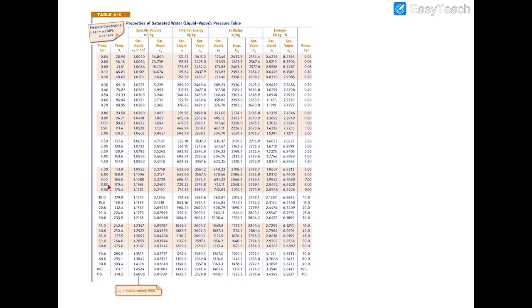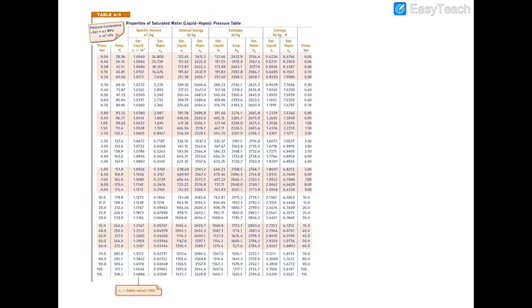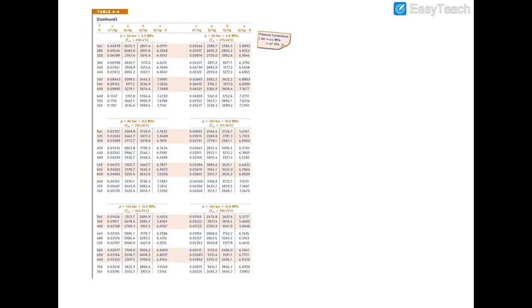At 80 bar, the saturation temperature is 170.4 degrees Celsius, and we're far above that at 440 degrees Celsius, so we're in the superheated region. Going to the superheated table for water at 80 bar and 440°C, we find the specific volume is 0.03742 meters cubed per kilogram.